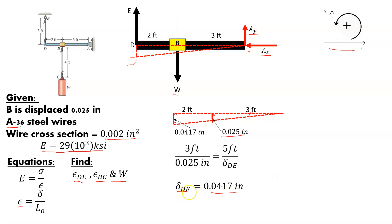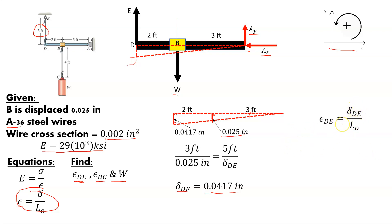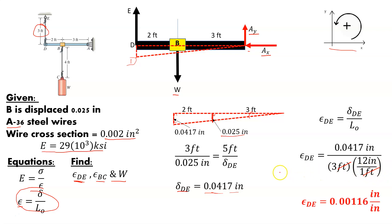That's what that proportional leg gives us because the bar is rigid — that is the deformation of DE. We know what we're looking for: the strain of DE. We've got the original length of DE, which is 3 feet. So strain of DE equals the deformation of DE over its original length, converting feet to inches, and we end up with a strain of 0.00116 inches per inch. We've already solved one part of the problem.